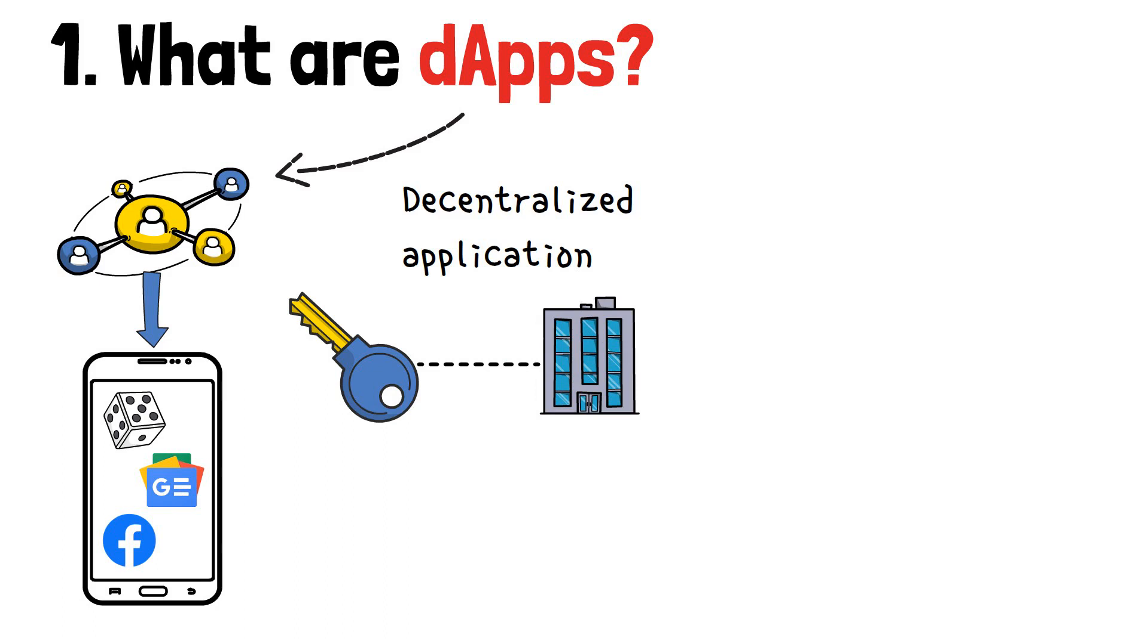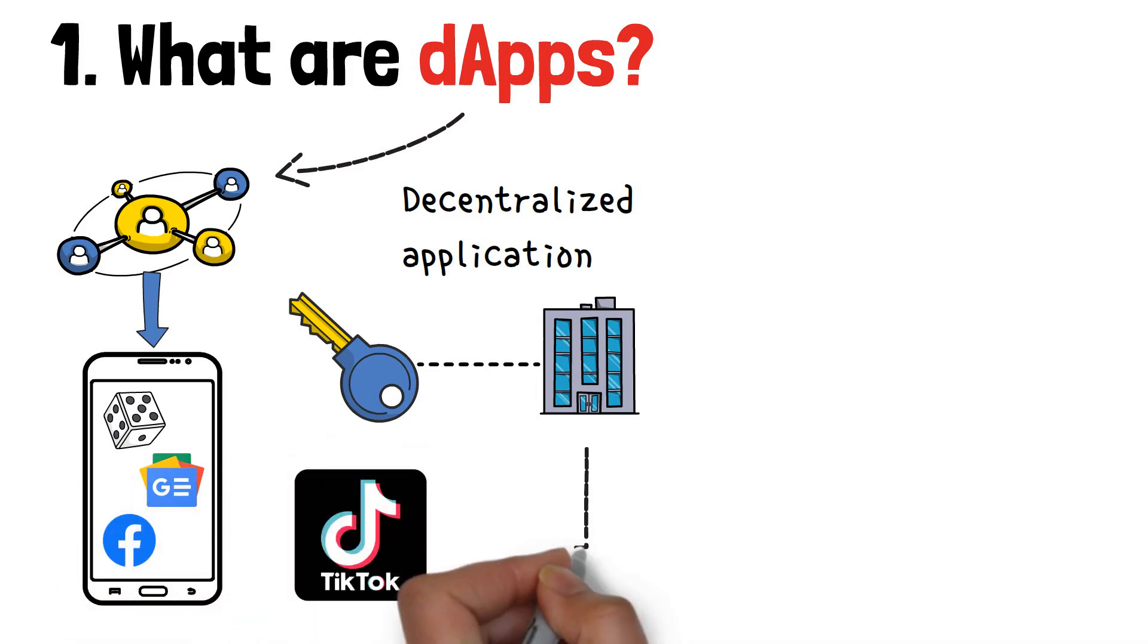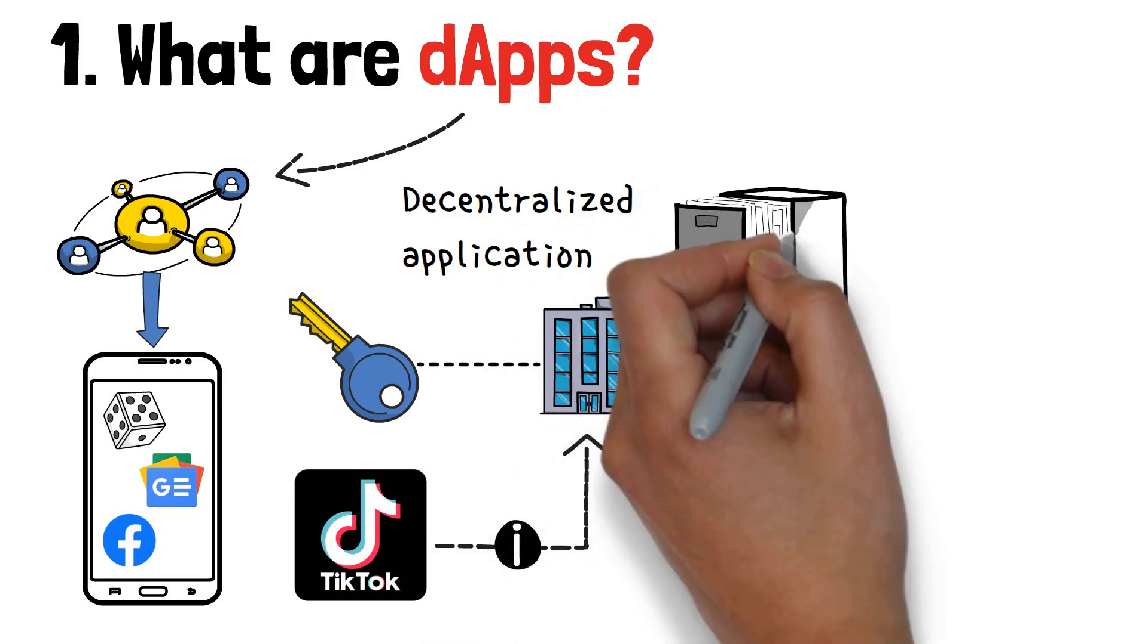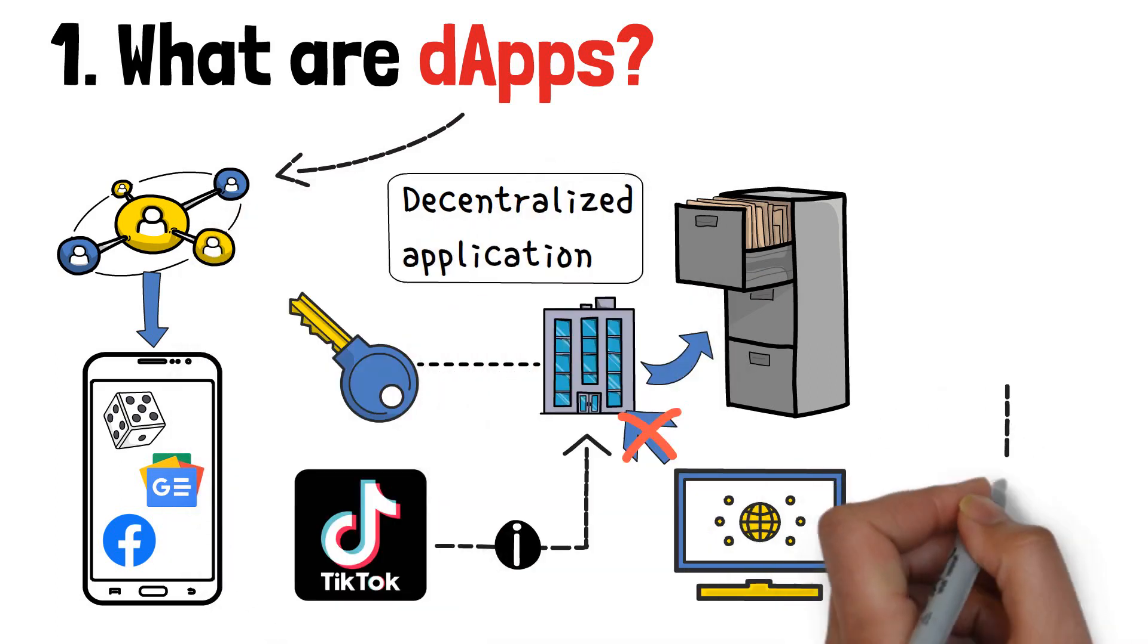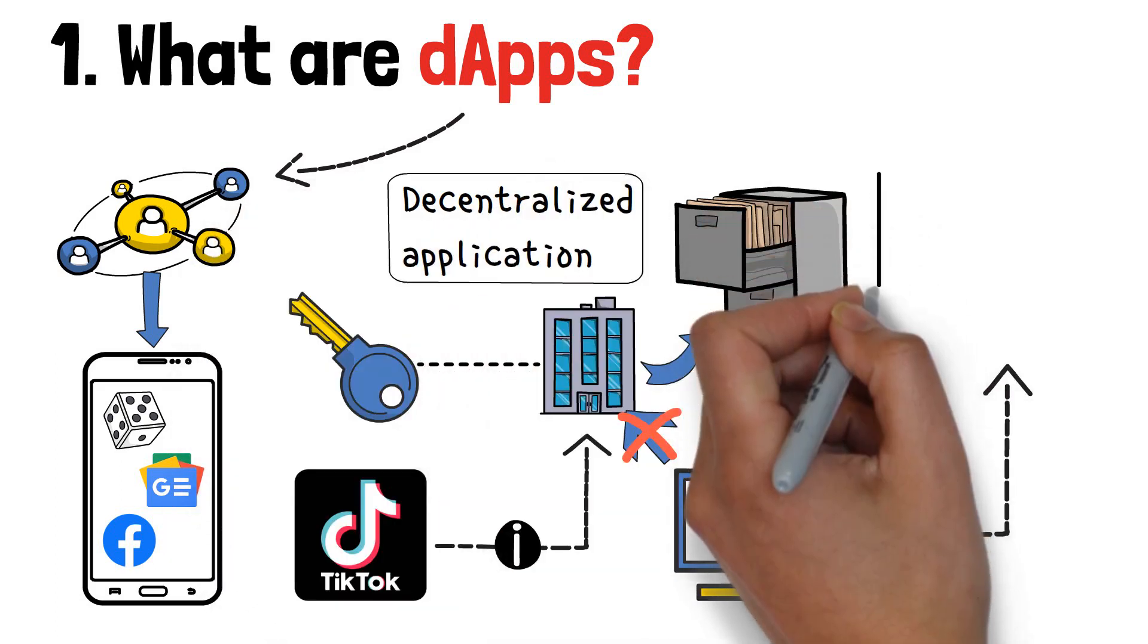So if you're using, say, TikTok, all of your information is sent back to the servers of the company – in other words, your data is collected and stored by a centralized institution. With dApps, however, this is not the case. Instead, decentralized applications don't have a single governing authority – it's in the name, really.